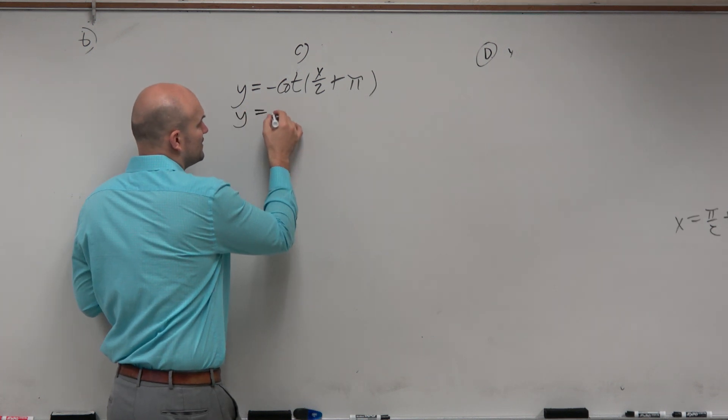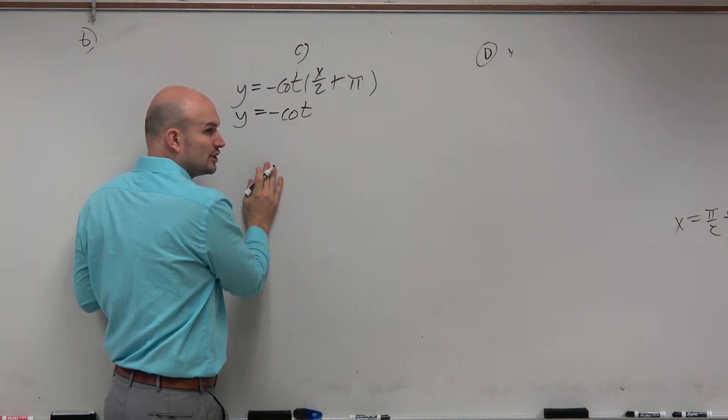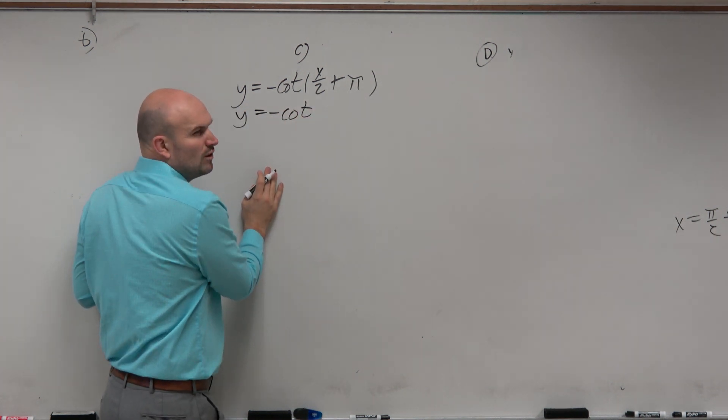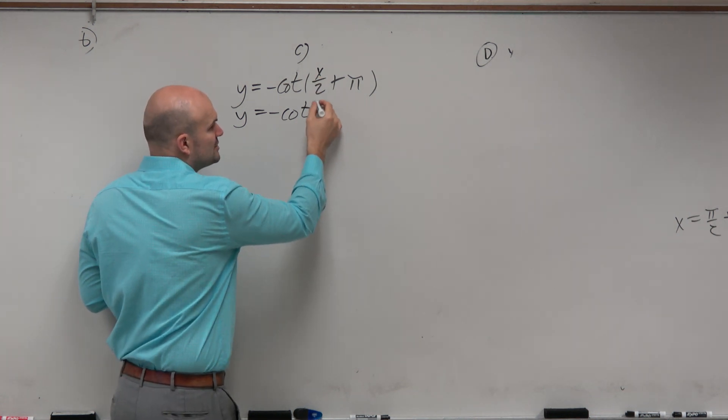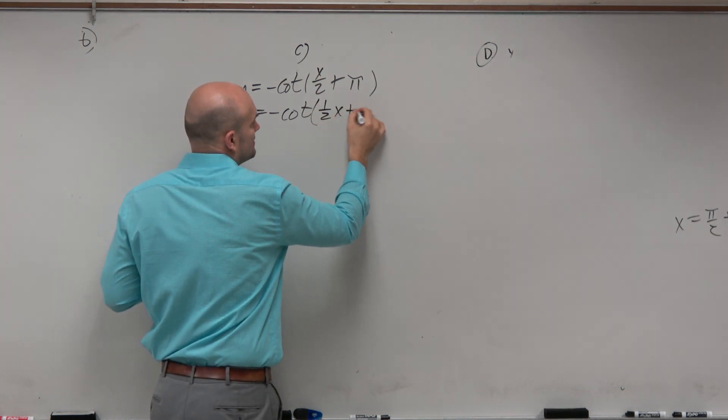Well, obviously, the more you do of these, the better you're going to get. I'll just do this like one by one. x divided by 2 is the same thing as 1 half x plus pi.